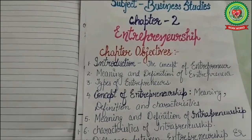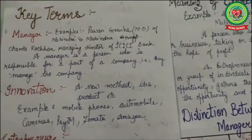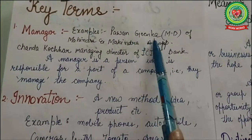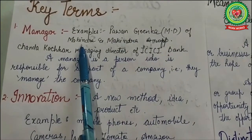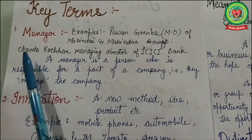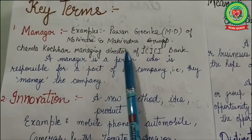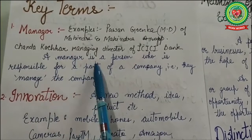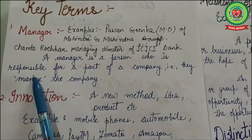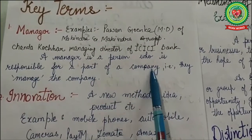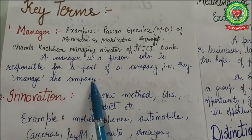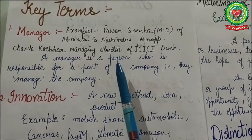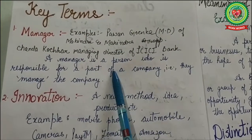First we will discuss our key terms. The first key term is manager. For example, Pawan Goenka, managing director of Mahindra and Mahindra Group, and Chanda Kochar, managing director of ICICI Bank. A manager is a person who is responsible for a part of a company — they manage the affairs and activities of the company.